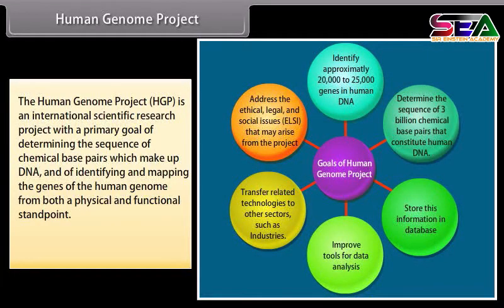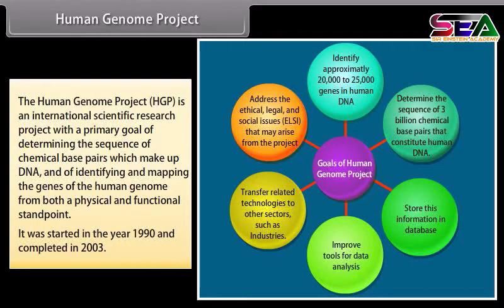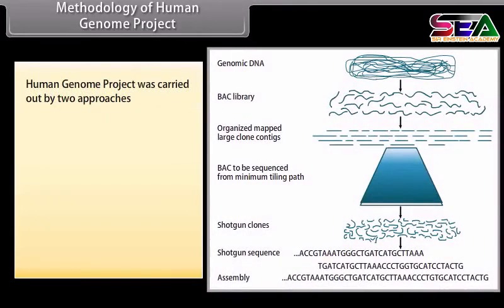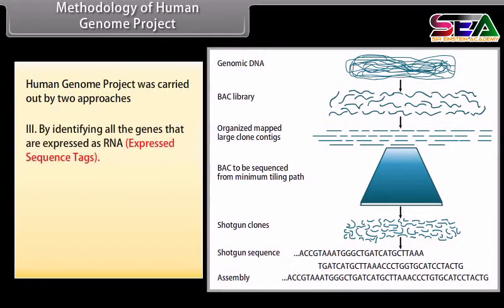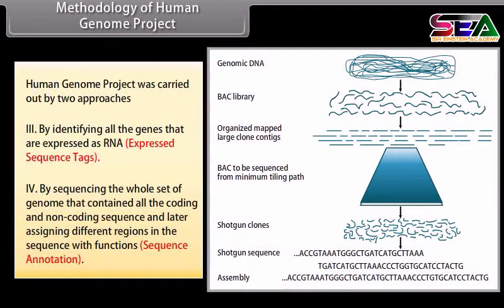The Human Genome Project (HGP) is an international scientific research project with the primary goal of determining the sequence of chemical base pairs which make up DNA, and of identifying and mapping the genes of the human genome from both a physical and functional standpoint. It was started in 1990 and completed in 2003. It was carried out by two approaches: by identifying all genes expressed as RNA, known as expressed sequence tags, and by sequencing the whole genome containing all coding and non-coding sequences, later assigning different regions with functions.